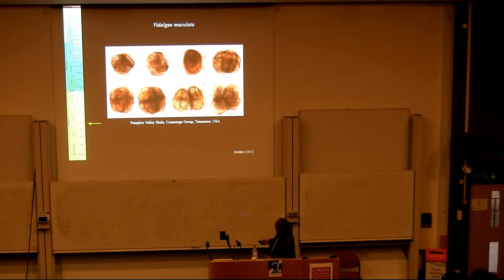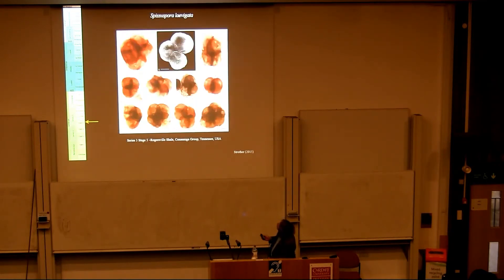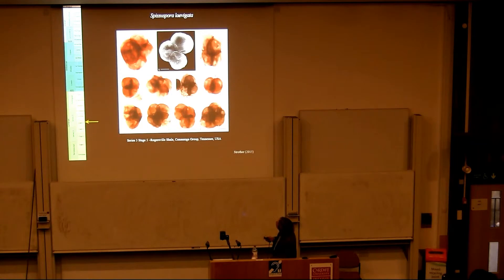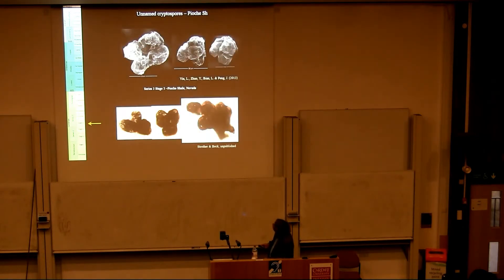Another new genus is Vidalgia. Here's Vistosporus, another new genus — this one is very spore-like. Sometimes tetrads are rather uniform with a uniform wall, and this form looks very much like some of the later Ordovician forms.